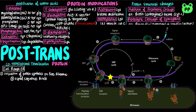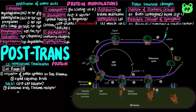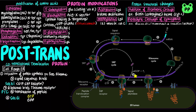GTP-bound signal recognition particle directs the ribosome and the incomplete polypeptide to the cytosolic face of the endoplasmic reticulum. GTP-bound SRP receptors, known as SEC-61, bind SRP. The ribosome receptor binds the ribosome, and the peptide translocation complex, abbreviated as PTC, located on the ER membrane, translocates the nascent polypeptide to the ER lumen.